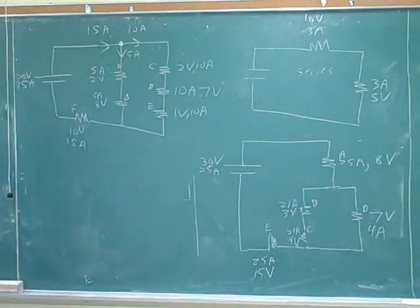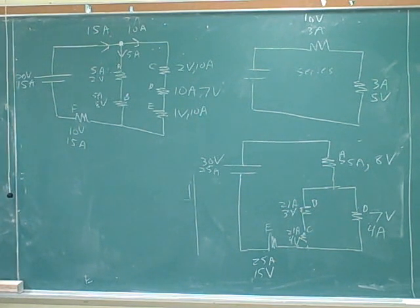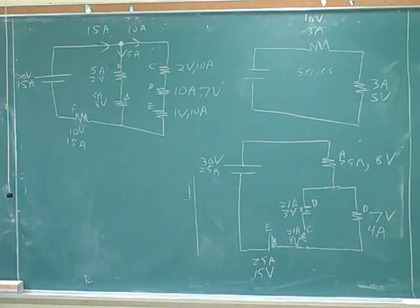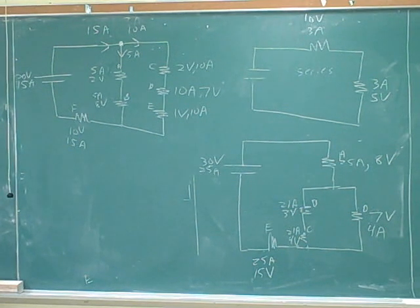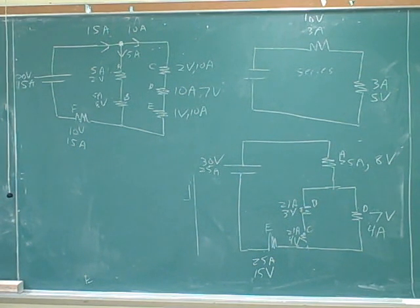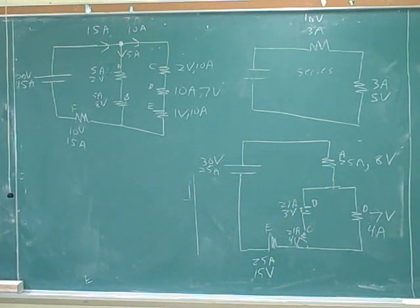Well, now we're ready to state Kirchhoff's laws. You might have heard your instructor talking about these in lecture. Kirchhoff's laws are basically just the common sense of our ski lift analogy, using voltage change in terms of height and amps in terms of coulombs per second. One of Kirchhoff's laws says the sum of the voltage sources around any loop equals the sum of the voltage drops.